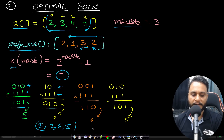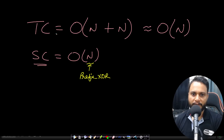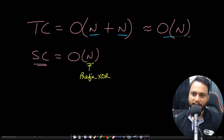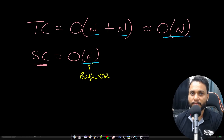The time complexity is O(n) for the pre-computation and O(n) for iterating and finding the max K value and building the result, so overall time complexity is O(n). The space complexity accounts for the prefix XOR array; the answer array is not counted. Now let's look at the code.